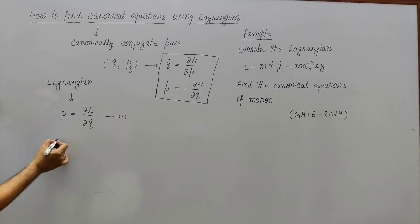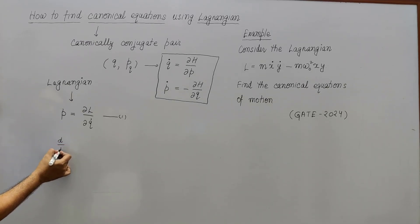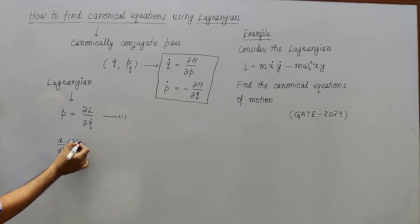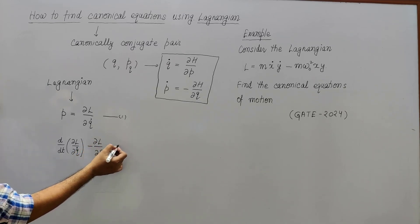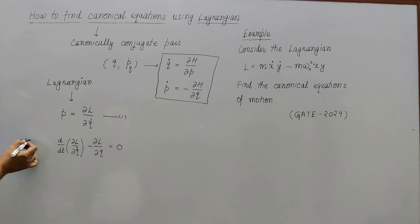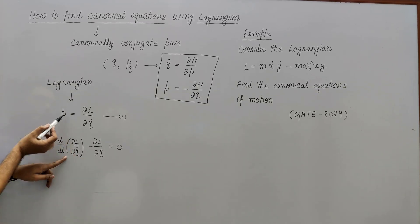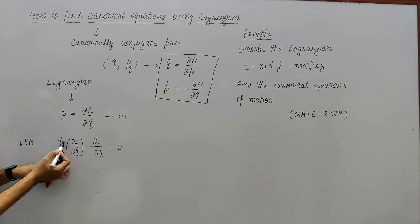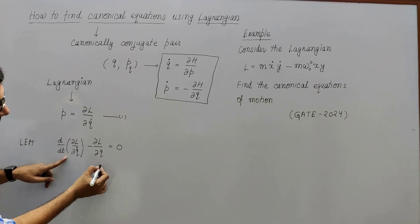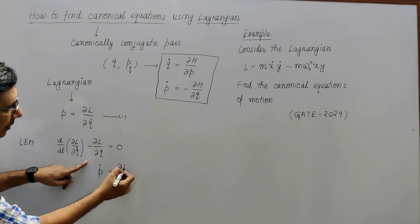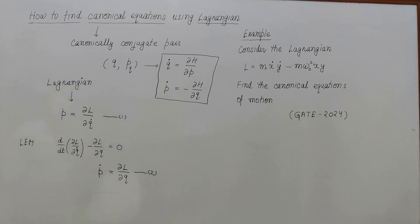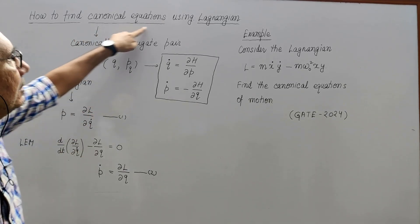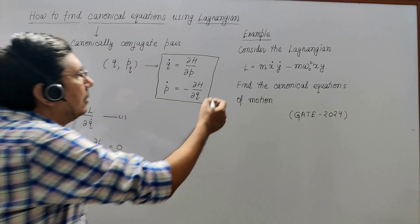The second equation comes from Lagrange's equation of motion: d/dt(∂L/∂q̇) - ∂L/∂q = 0. Since ∂L/∂q̇ = p, the term d/dt(∂L/∂q̇) becomes ṗ. Bringing the other term to the right-hand side gives ṗ = ∂L/∂q. This is the second equation we will use.